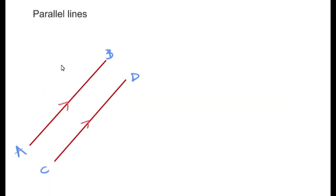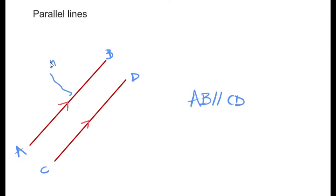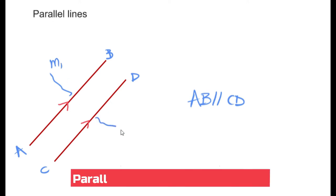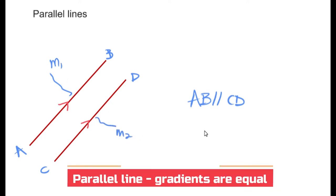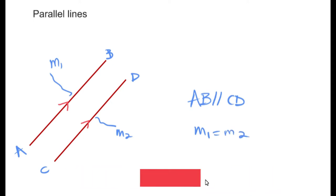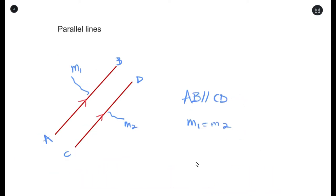Parallel lines: whenever you're working with parallel lines in analytical geometry, we say that the gradients of those lines are equal. So if line AB is parallel to line CD, then gradient M1 equals gradient M2.